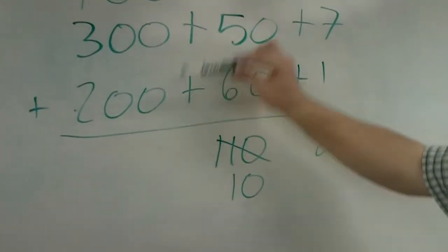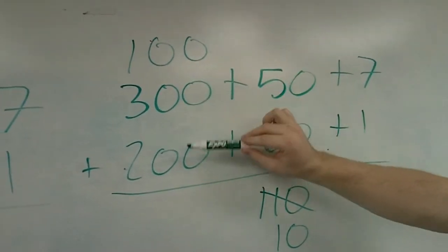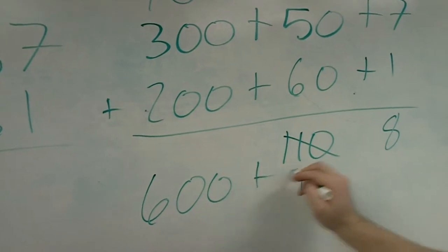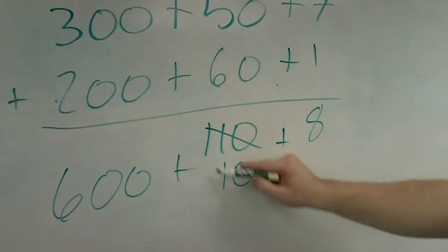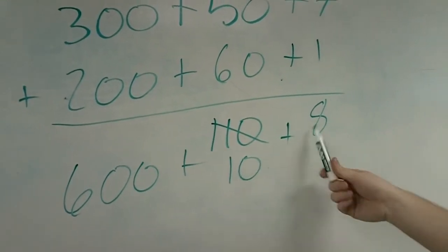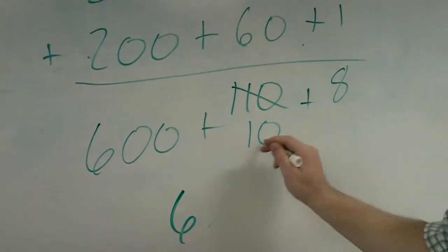So then we can add our hundreds column. 100 plus 300 plus 200 is 600. And then when we go to put it back together, we need to remember that we've changed this. So what we are adding together is 600 plus 10 plus 8, which is 618.